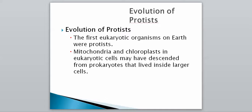And so how this group actually came to be — these are actually our first eukaryotic organisms on earth, and their mitochondria and chloroplasts and eukaryotic cells may have descended from prokaryotes that lived inside larger cells. So what this is saying is that this group came along because there were some prokaryotic cells that actually lived inside of one another, and that's actually kind of how eukaryotic cells came to be. This is just an introduction saying that this group most likely evolved from a bunch of prokaryotic cells that came together to form one large cell.